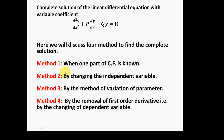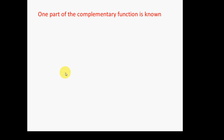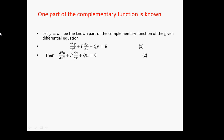In this video lecture, I will talk about the method when one part of the complementary function is known. When one part of the complementary function is known — a complementary function is also a type of solution. Let us suppose that y = u is the one part of the complementary function of the given differential equation d²y/dx² + P(dy/dx) + Qy = R. If y = u satisfies the complementary function, then d²u/dx² + P(du/dx) + Qu = 0 — that is equation number 2.